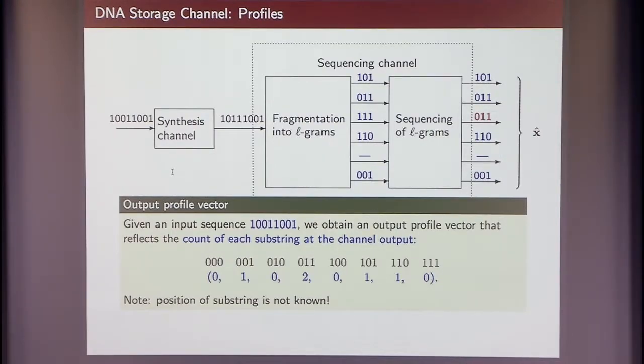I observed 0, 1, 1. And I observed it twice because of this error here. So I'll write it twice. And I observed 0 times 1, 1, 1. I observed 0 times 0, 0, 0. And this is what we call the substring composition type or profile vector of the output. And notice that the profile vector of the output is different from the profile vector of the original sequences you started from because you had synthesis errors and you had sequencing errors.